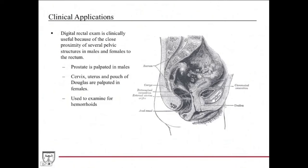In females, the digital rectal exam can help palpate lesions in the cervix and the lower part of the uterus, which are anterior to the rectum. You can also palpate the pouch of Douglas — a fold of peritoneum in this region — which is useful because endometriosis and cancerous lesions can develop there.